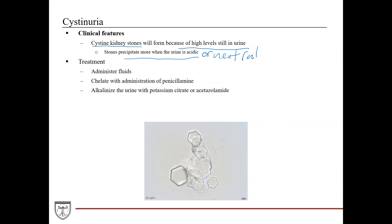Treatment is similar to traditional kidney stones: administer fluids and chelate with penicillamine. You can try to make the urine alkaline with potassium citrate or acetazolamide, because kidney stones are more likely to form in acidic urine — making it basic reduces stone development. On microscopy, these stones have a hexagonal shape and can be translucent or whitish appearing. This is an image you want to be familiar with for boards.